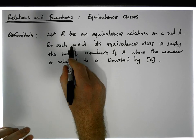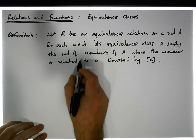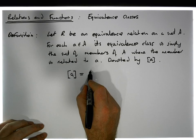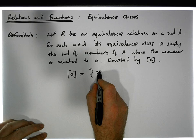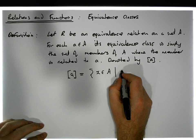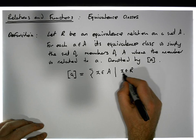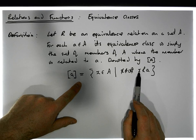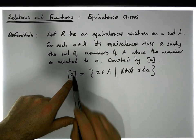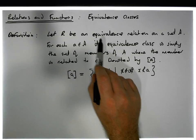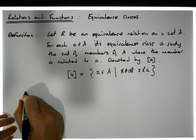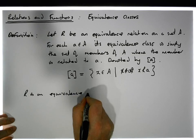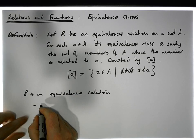So for each element of A there's an equivalence class. What is this equivalence class? It's the set of elements in A with the property that the element is related to a — all elements related to a form the equivalence class. Keep in mind that R is an equivalence relation, so by default it is reflexive, symmetric, and transitive.